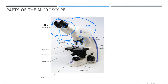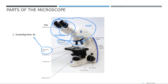In the nose piece you will find, usually in the microscope, four objective lenses. The first one is called the scanning lens — it has 4 times power. The scanning lens is the shortest one. The second one is called the low power lens — it has 10 times power.